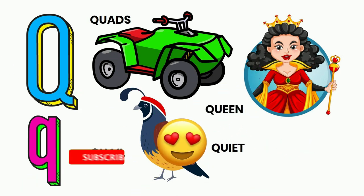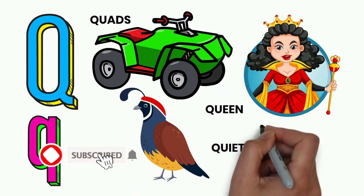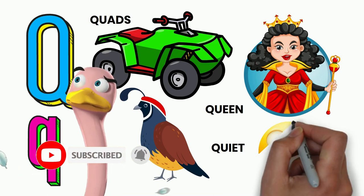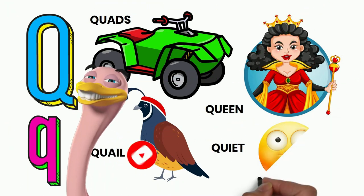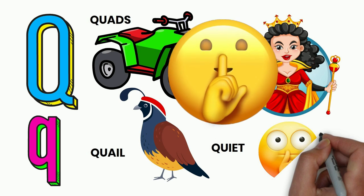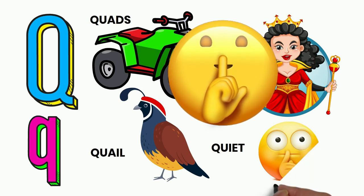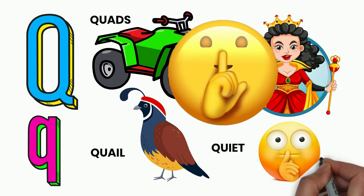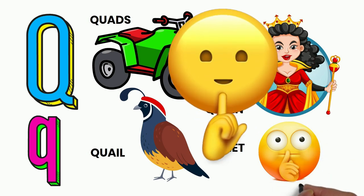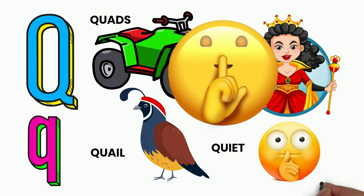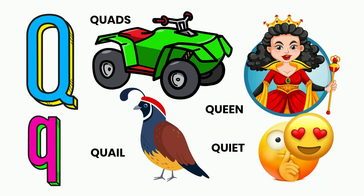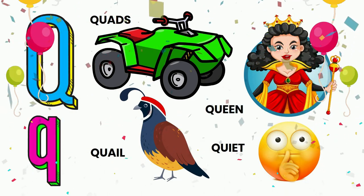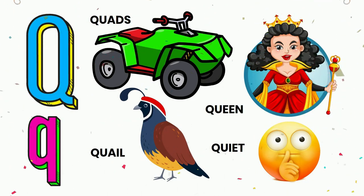Let's draw a quads. A, B, C, D, E, and Z. H, I, J, K, L, M, N, O, P. Q, R, S, T, U, V. W, X, Y, and Z. Now I know my ABCs. Next time won't you sing with me.